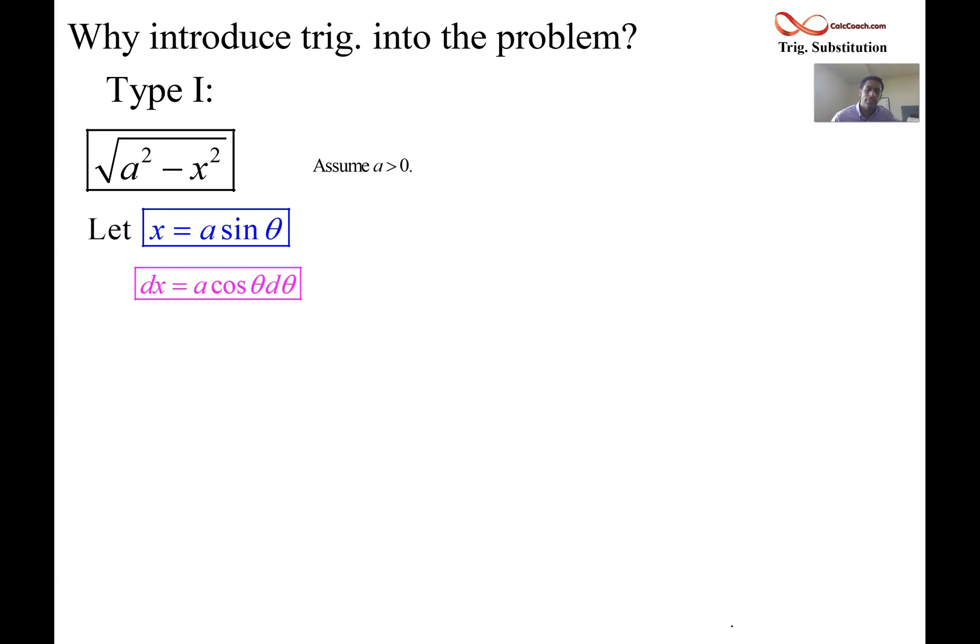The derivative of sine is cosine, so dx is a cosine theta d theta. Remember, a is a constant. But what we're here for is to figure out how the radical gets replaced. And so let's go through the algebra. It's not something you have to do every time. At the bottom of this column here, we're going to have exactly what the radical gets replaced with, and you could just use that when you approach a problem like this. But I want you to see why it's like that, though.